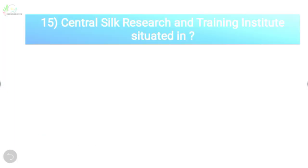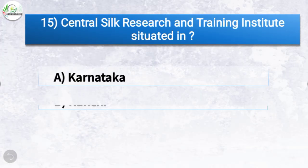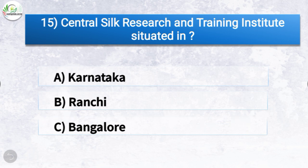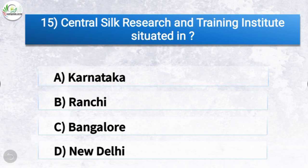Question number fifteen: Central Silk Research and Training Institute is situated in which location? The options are Karnataka, Ranchi, Bangalore, or New Delhi. The correct answer is option A, Karnataka. So Central Silk Research and Training Institute is situated in Mysore, Karnataka.